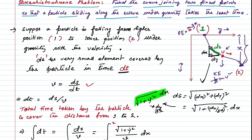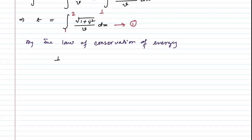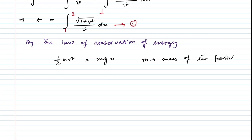By the law of conservation of energy: ½mv² = mgx. The mass m cancels, giving v² = 2gx, so V = √(2gx). This is equation number 2.